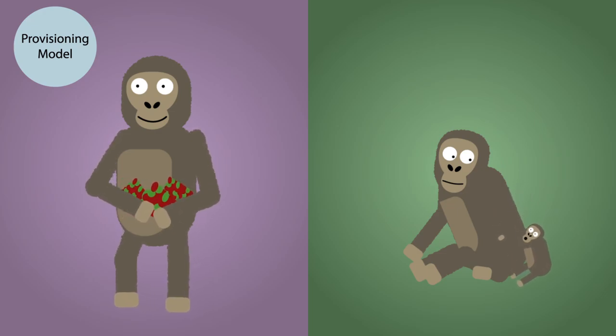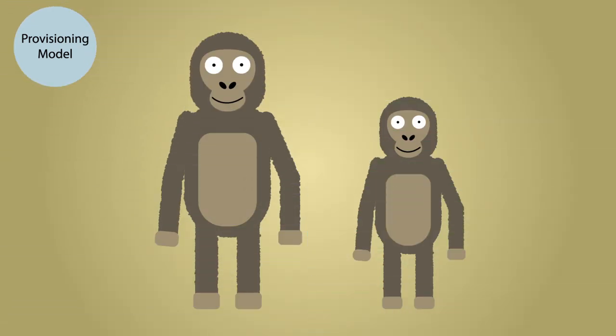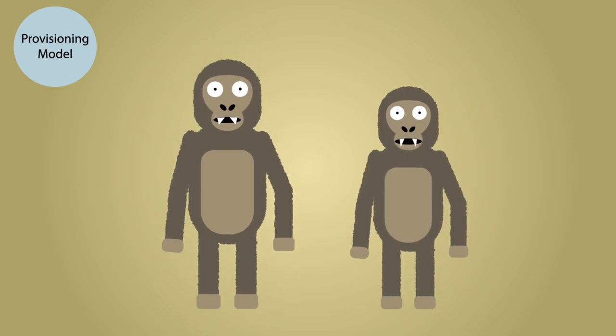As revealed by fossil evidence, this theory is supported by the size reduction of the males' canine teeth and body size compared with the females, which is typical of a monogamous species.